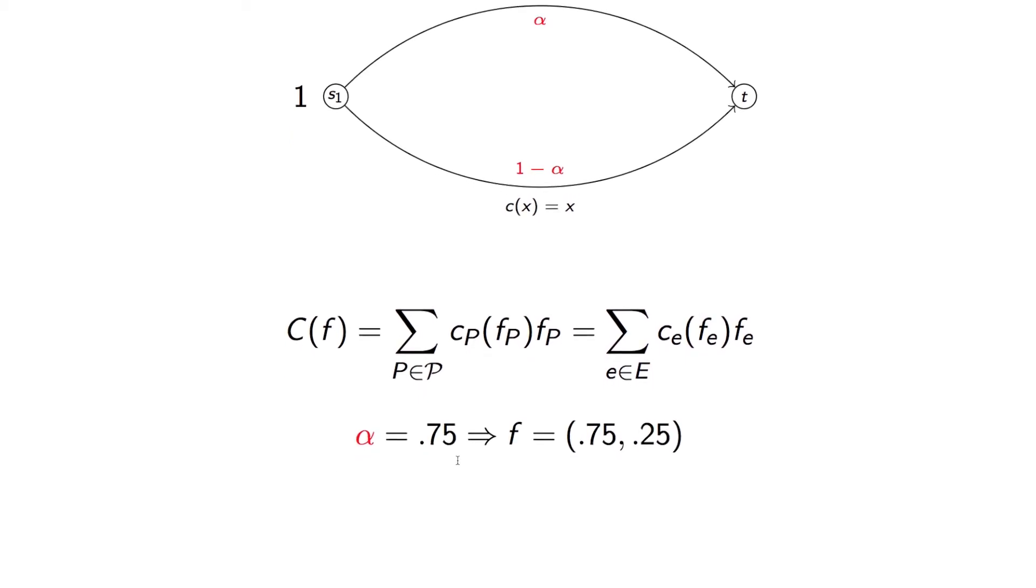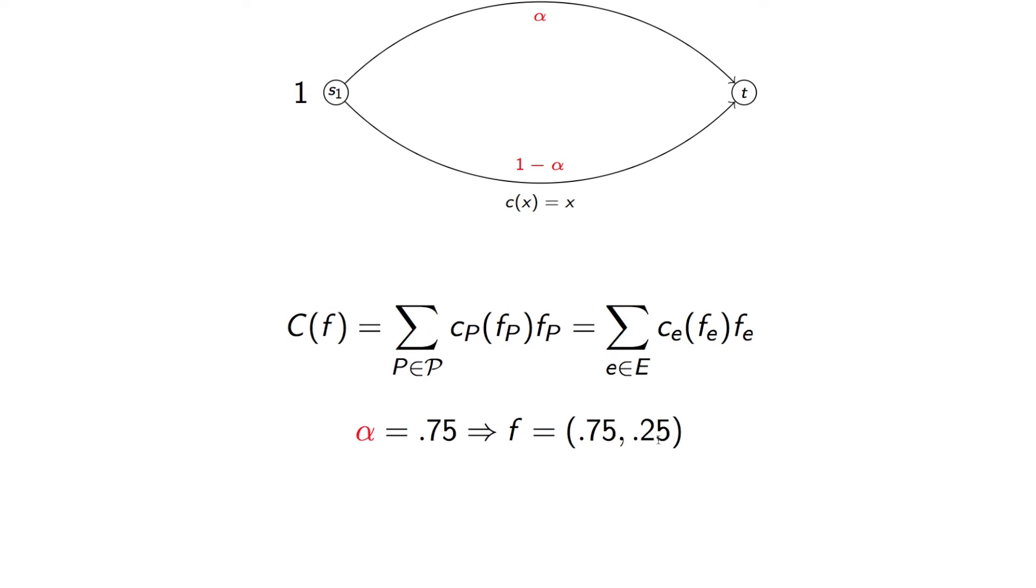And so if alpha was 0.75, our flow would be 0.75, 0.25, and we could write down our cost. So it's simply the cost of the top edge with 0.75 traffic on it, which is just 1 multiplied by 0.75, plus the cost of the traffic with 0.25 traffic going on it, which would just be 0.25 multiplied by 0.25. So we get the cost is 0.8125.